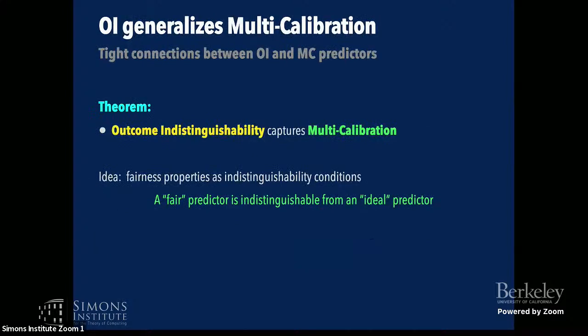Our main result is that outcome indistinguishability actually captures multi-calibration in a very strong way — there are tight connections and we can go back and forth between the two, but this framework is even more general. It sets up a compelling idea that we can think of fairness properties as some sort of indistinguishability conditions. Specifically, a fair predictor should be thought of as indistinguishable from a certain ideal predictor.